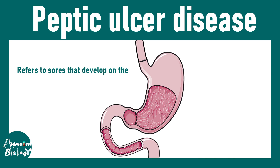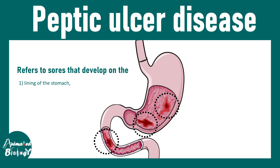In this video we'll be talking about peptic ulcer disease. Peptic ulcer refers to sores or ulcers that develop in different locations — in the lining of the stomach, the upper part of the small intestine which is the duodenum, and in rare occasions the lower part of the esophagus. This is collectively known as peptic ulcer disease. One of the biggest causes is H. pylori infection.